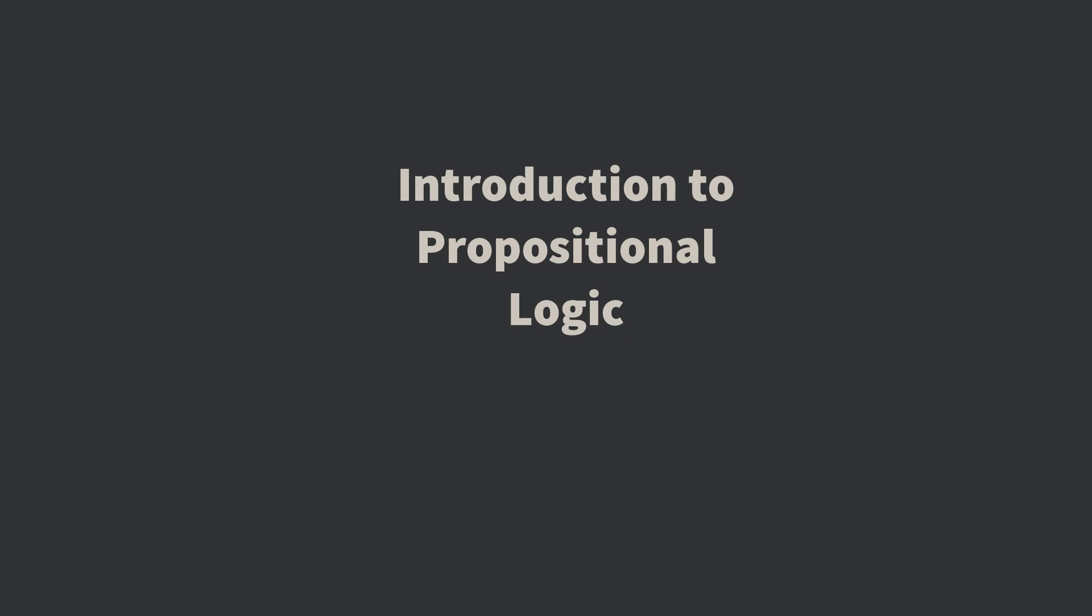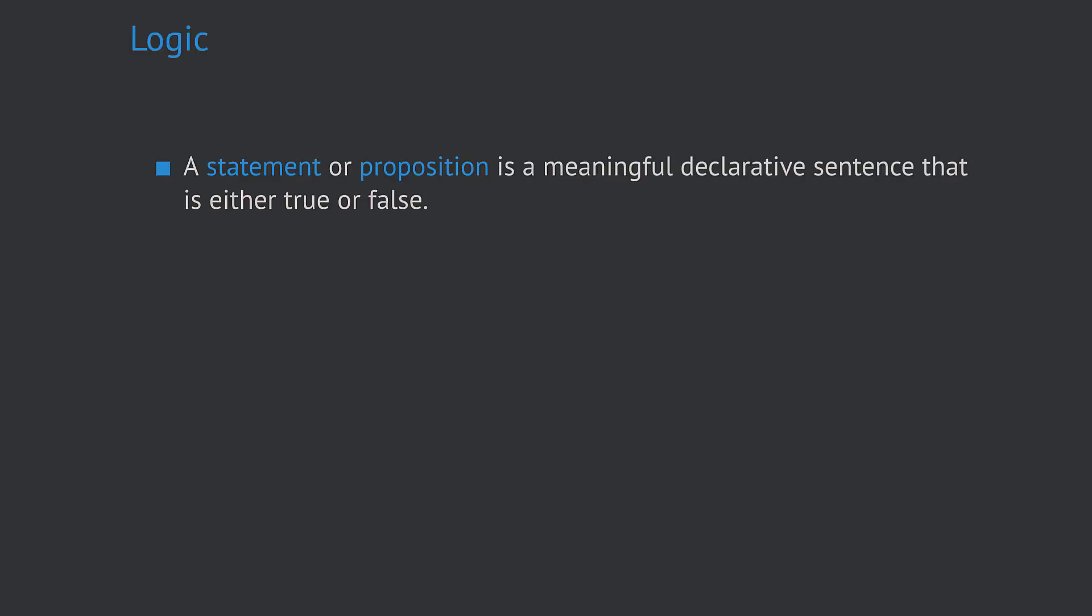But let's start at the beginning and introduce some definitions. A statement or proposition is a meaningful declarative sentence that is either true or false. In logical notation such statements are typically denoted by capital letters like A, B, C and so on. An example that is very often used in the literature is the sentence 'the sun is shining.' Obviously this sentence can either be true or false.